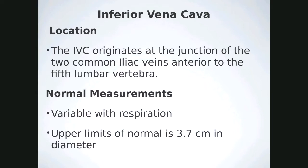The IVC originates at the junction of the two common iliac veins, anterior to the fifth lumbar vertebrae. Measurements are variable with respiration. The upper limits of normal is about 3.7 centimeters. If the patient is performing a Valsalva maneuver — holding their breath and bearing down — it can go up to 4 centimeters, but should never exceed that.